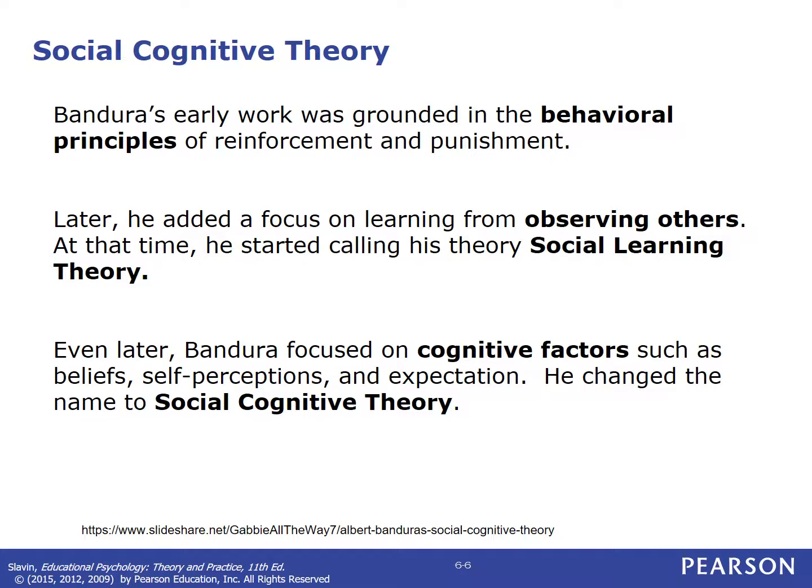Bandura studied the Pavlovian and Skinnerian theories, and his early work was grounded in behavioral principles of reinforcement and punishment. But he said those theories were missing a key piece of how and why we learn. So he added a focus on learning that we do by observing others, and after that he started calling his theories social learning theory.